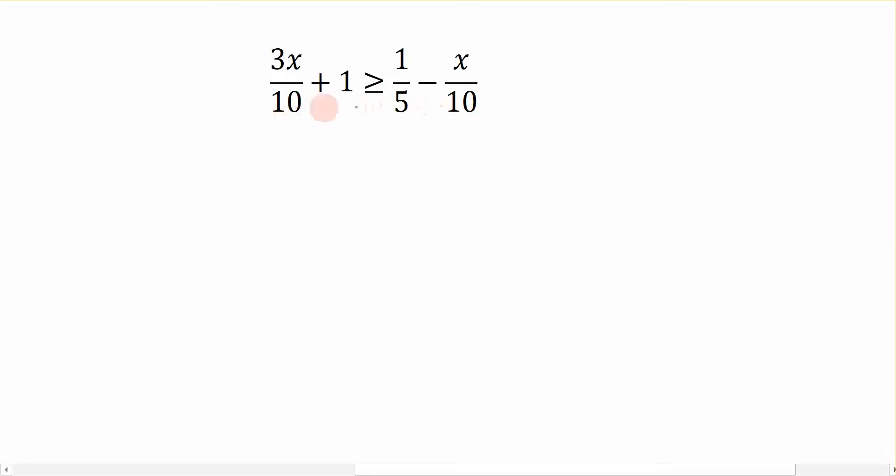So the common denominator between these three terms is 10. And that's the number that we're going to multiply both sides by to get rid of these fractions. So on the left hand side, I'm going to multiply this term by 10 over 1. And you can see that when I multiply that, the tens cancel, and it leaves me with just 3x. Here, we're going to multiply 10 over 1 times 1, which gives me 10, still greater than or equal to.